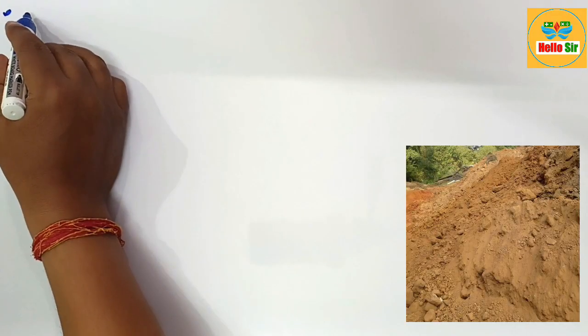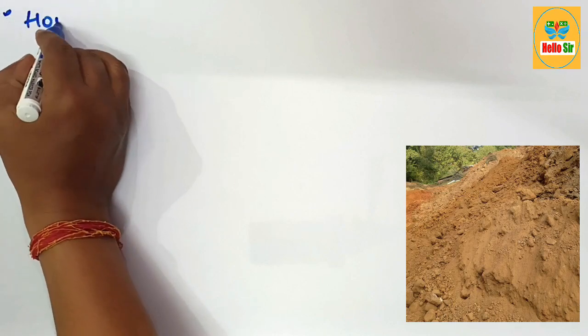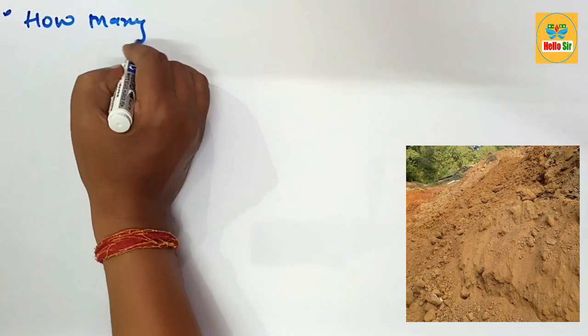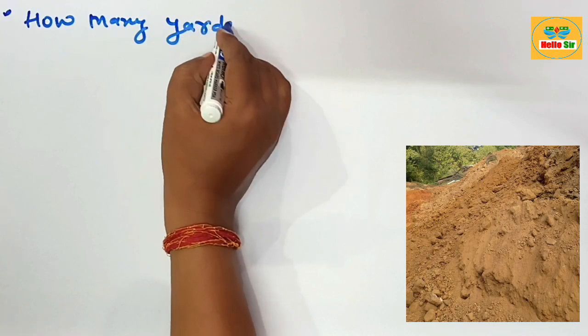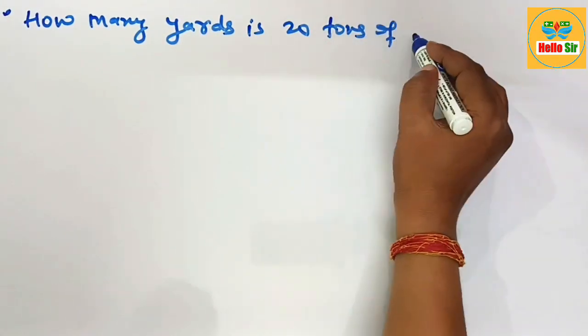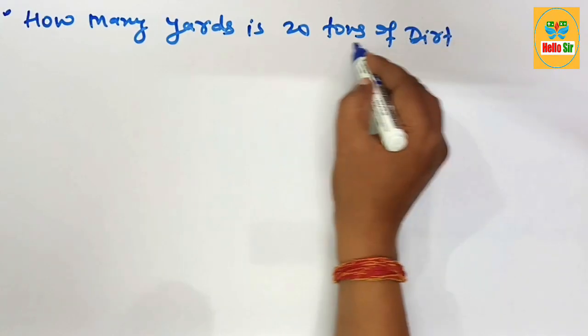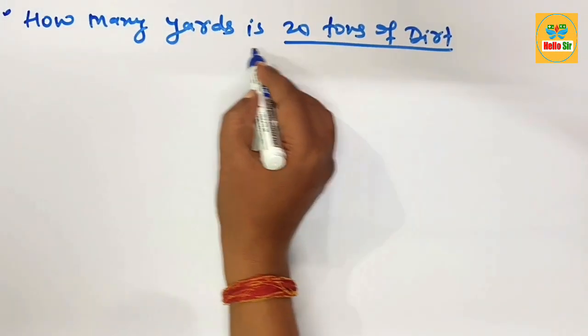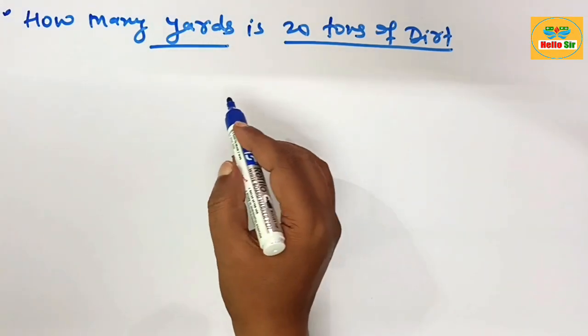Hi guys, today in this video you'll learn about how many yards is 20 tons of dirt. It means you have to convert 20 tons of dirt into cubic yards.